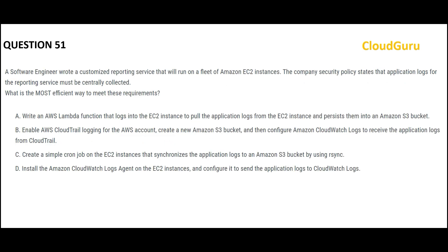Let's look at the next question. There are many EC2 instances — a fleet of EC2 instances — with a reporting application deployed on them. The requirement is that application logs from each of these instances should be centrally collected — all logs should go to one place. What is the most efficient way? Thumb rule time: the first thing you do is install the CloudWatch agent on each of the EC2 instances.